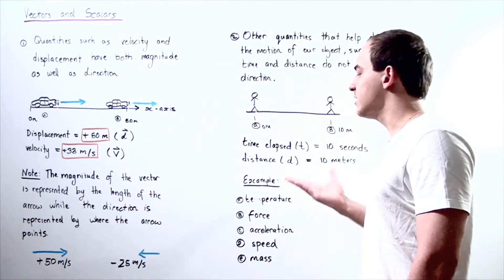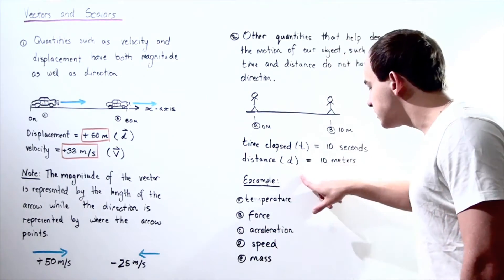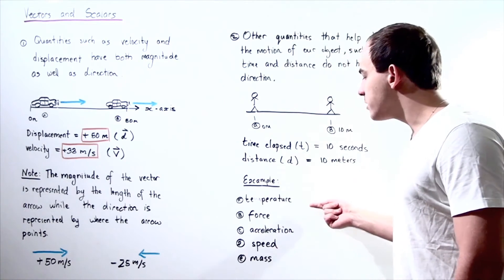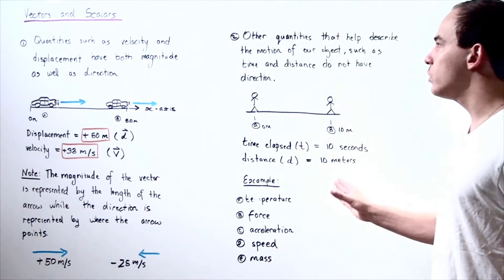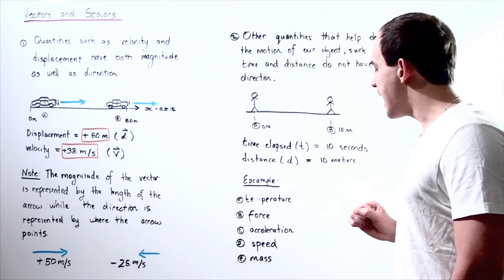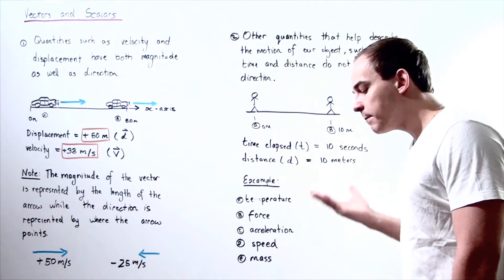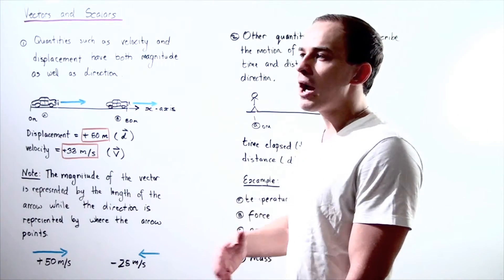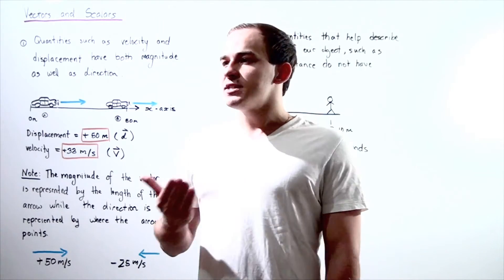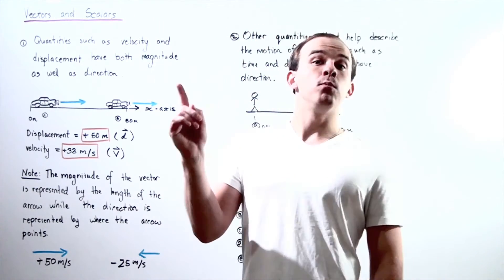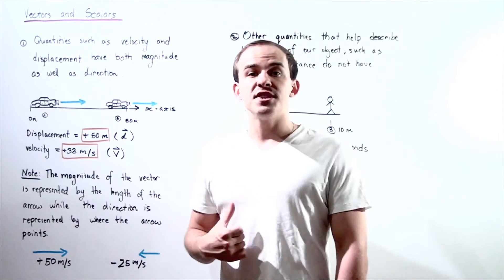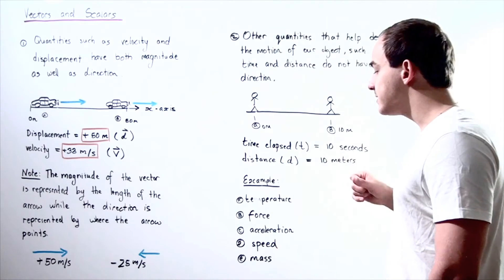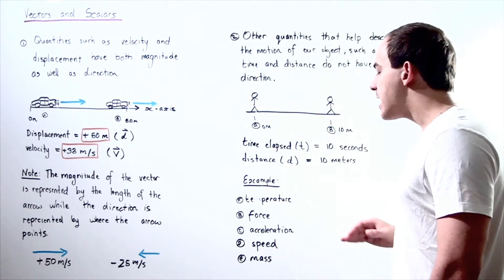Let's look at five examples and determine which are scalars and which are vectors. Temperature only has magnitude — we never specify a direction for temperature; we never say it's 80 degrees pointing upward or downward. So temperature, like time and distance, is a scalar.